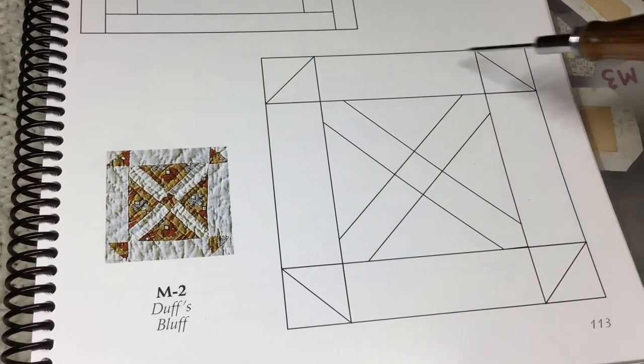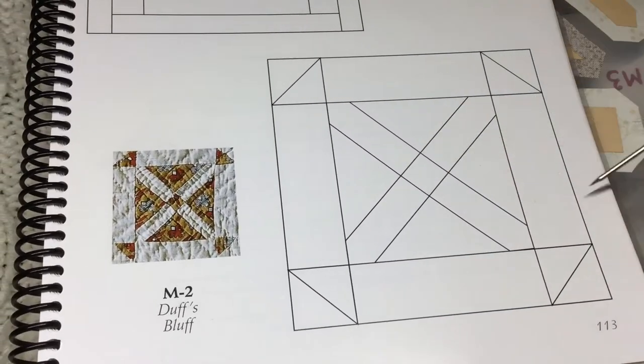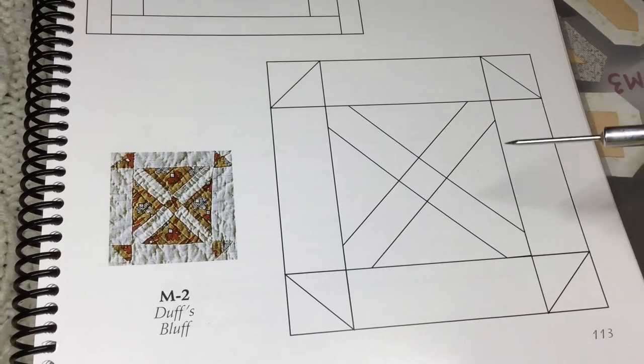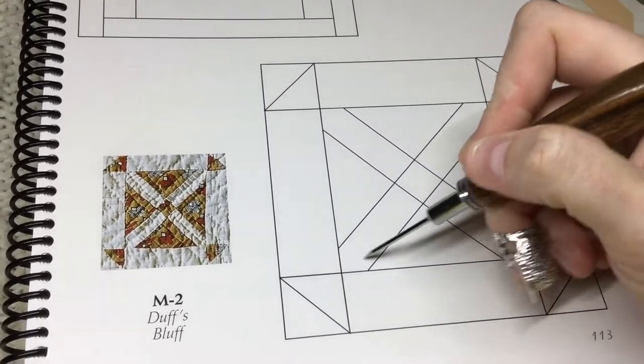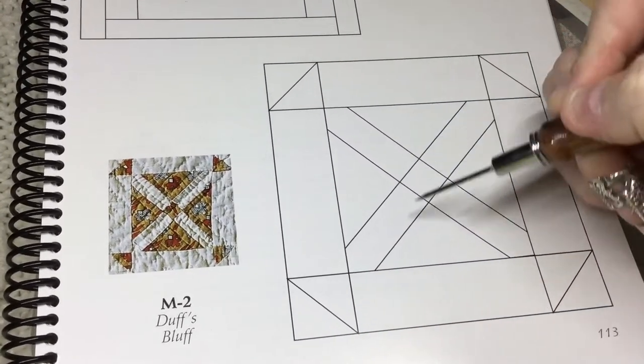At its core, it's a nine patch. So you've got three rows that you assemble and then put together all as one. However, the center block is an on-point assembly.